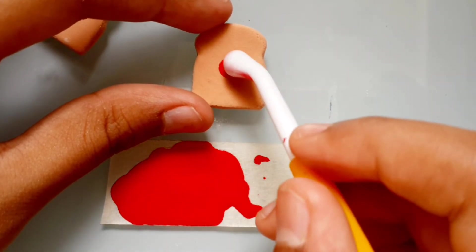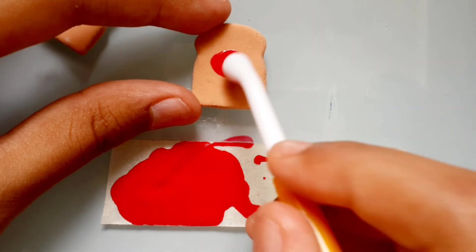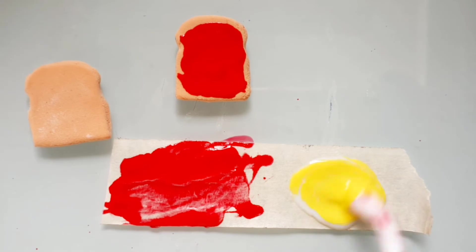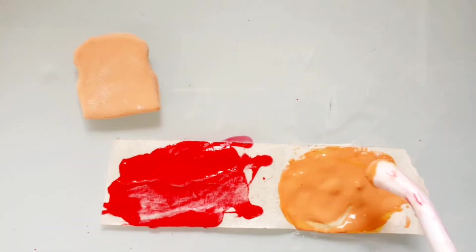Now do the same with the other to make peanut butter. If you want, you can add some flour to make it thick.